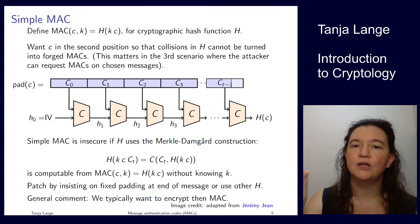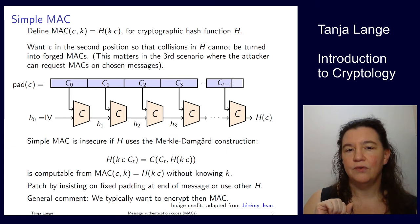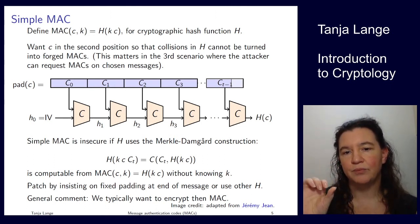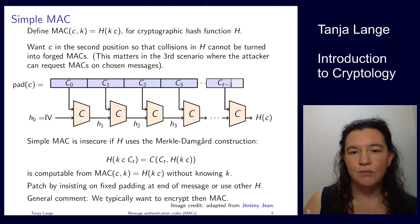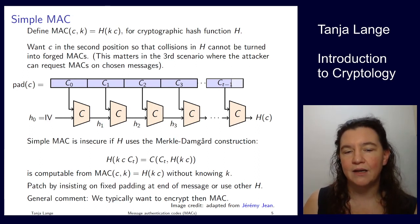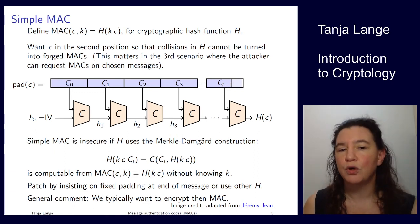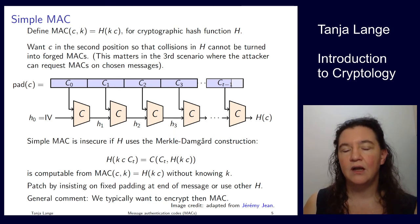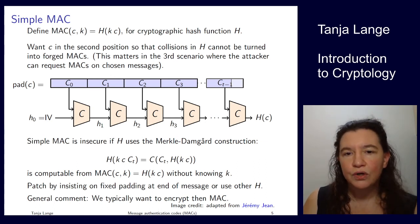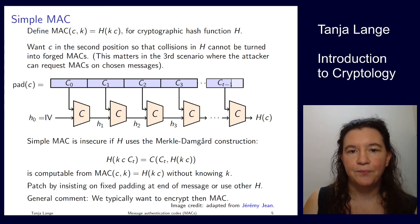To compute the MAC on c appended with an extra block ct, by definition you take the hash of the previous part — which is just key k concatenated with c — and run the compression function with ct. This last result can be computed from the MAC you are given and the ct you are choosing, without knowing the key k, so this does not authenticate. You can patch this by insisting on fixed padding at the end, or use a hash function that does not have these length extension attacks — but it is better to use a different MAC altogether.